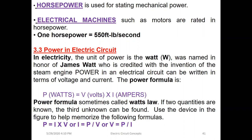This power formula is sometimes called Watt's law. If two quantities are known, the third unknown can be found. For example, if we are given I and V, we can determine power P. If we are given P and V, we can find I. If we are given P and I, we can find V. The general formula is P equals V times I.